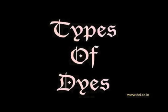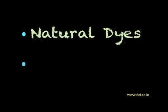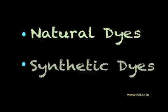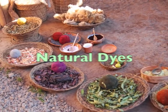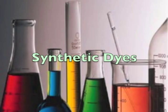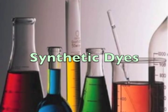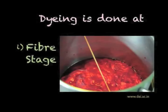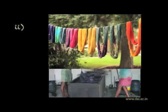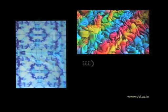There are various types of dyes to dye different fabrics, which can be classified as natural dyes and synthetic dyes. Dyeing can be done at the fiber stage, yarn stage, fabric stage, or finished product stage, depending on the necessity.